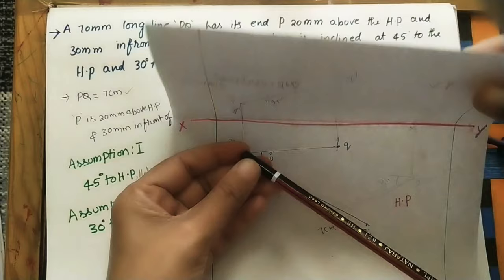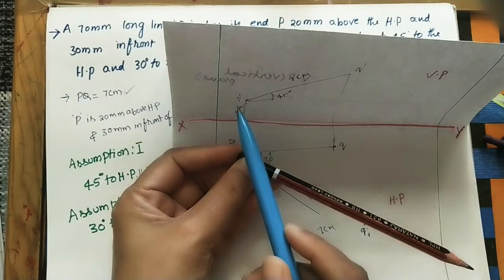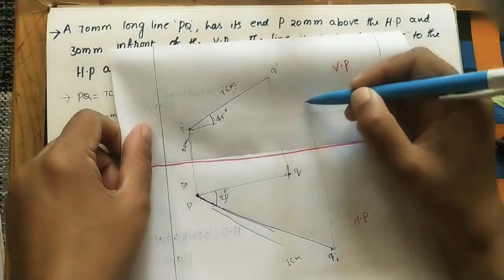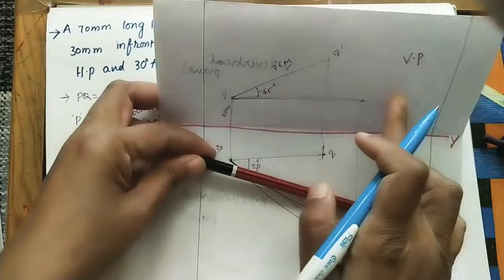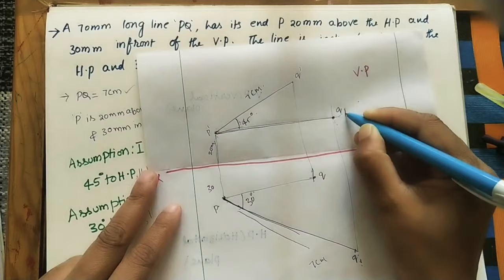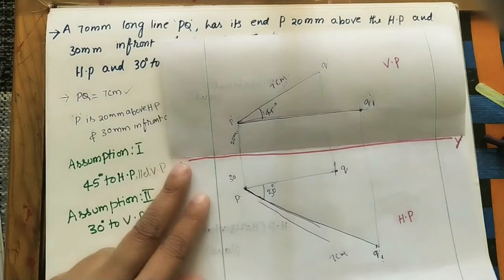For the second assumption, in the front view the line looks like a horizontal line. Draw projector lines from Q1 up to the horizontal line through P'. This gives Q1' in the front view. So we now have the diagram for the first assumption and the diagram for the second assumption, and we need to combine these two to get the projections of the final line.